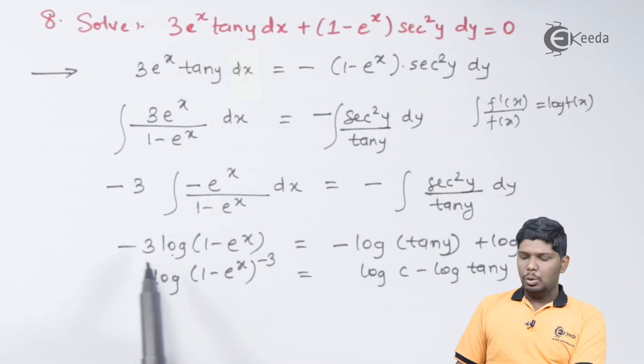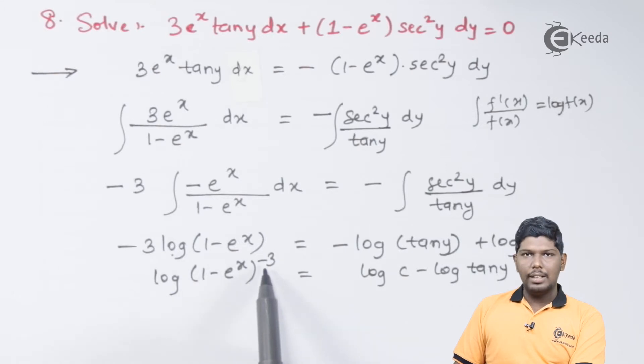On the left hand side, we can use m log a that can be written as log a raise to m. This will give you log of 1 minus e raise to x minus 3 is equal to, we have rearranged this term as log c minus log of tan y.